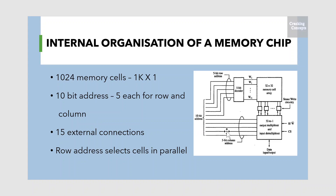A row address selects a row of 32 cells, all of which are accessed in parallel. However, according to the column address, only one of these cells is connected to the external data line by the output multiplexer and the input demultiplexer.